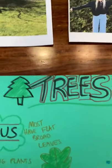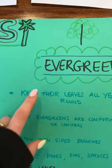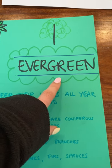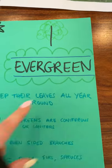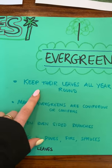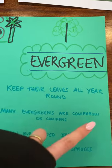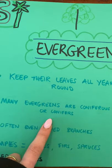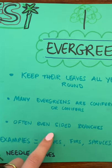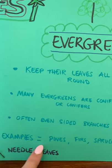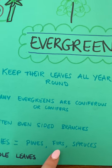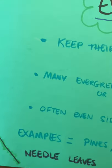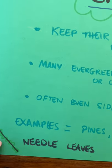The other type of tree we're going to be looking at is evergreen. Evergreen. E-V-E-R-G-R-E-E-N. Evergreen. Now these trees keep their leaves all year round. And many evergreens are coniferous or conifers. They often have even sided branches. And examples are pines, firs, and spruces. This is an example of what their leaves will look like. They're like needles.